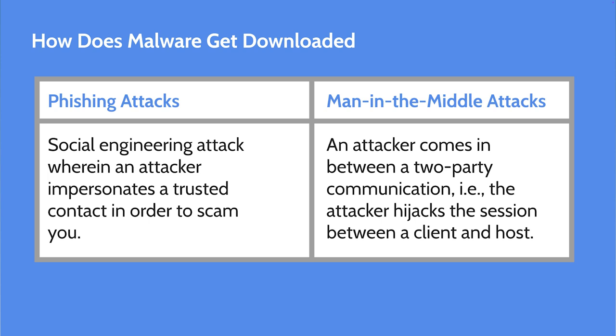So how does malware even get downloaded? Hackers will trick you into downloading malware. There are two main ways that we may accidentally download malware: one is through phishing attacks, and the other is through man-in-the-middle attacks. Phishing attacks are social engineering attacks where a hacker impersonates a trusted individual in order to scam you. A man-in-the-middle attack is when an attacker comes in between two parties of communication, hijacking a session between a client and host.